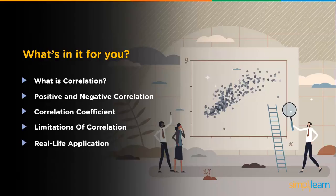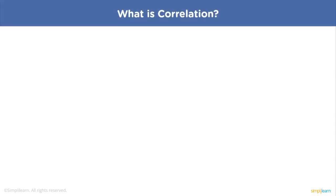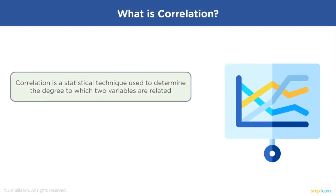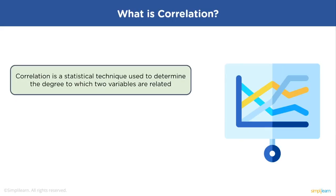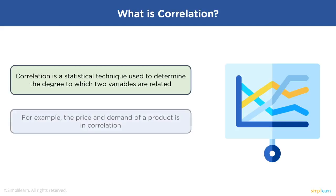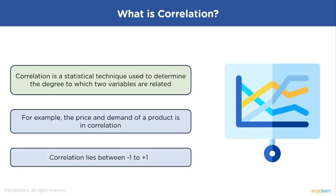So let's get started. What is correlation? Correlation refers to a statistical relationship between two entities. It measures the extent to which two variables are linearly related. For example, the price and demand of a product are in correlation. They are linearly related. The value of correlation always lies between -1 to +1.